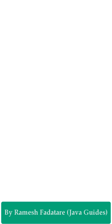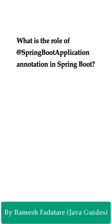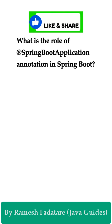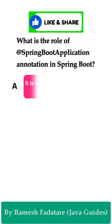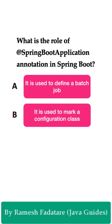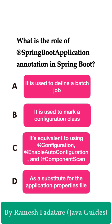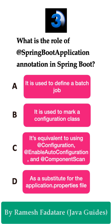Welcome to the Spring Boot quiz series. Here is the question: What is the role of the @SpringBootApplication annotation in a Spring Boot application? Option A: it is used to define a batch job. Option B: it is used to mark a configuration class. Option C: it's equivalent to using @Configuration, @EnableAutoConfiguration, and @ComponentScan annotations. Option D: it is used as a substitute for the application.properties file. You have five seconds to answer this question.